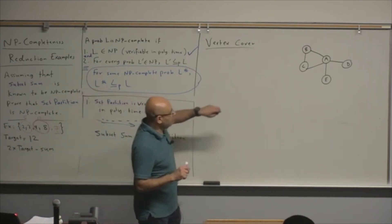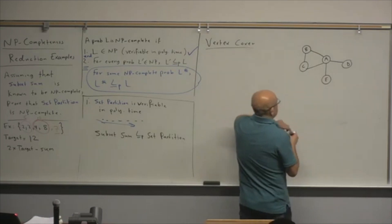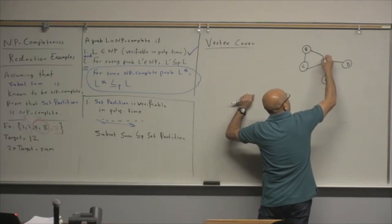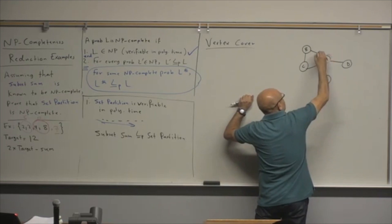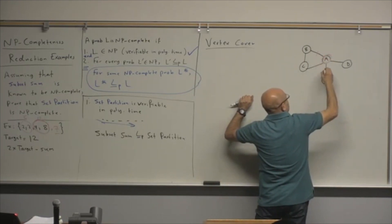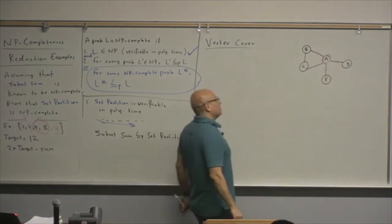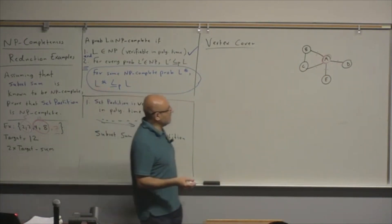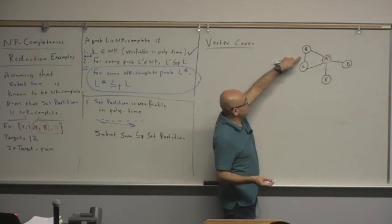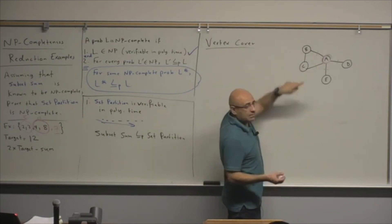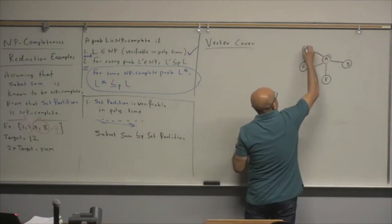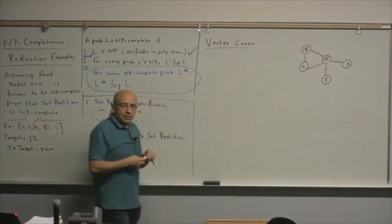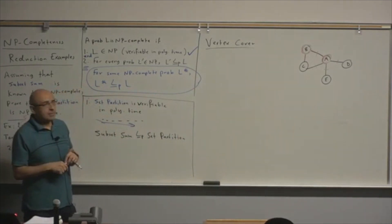So here, vertex A has many edges. If we use A, we cover this edge, this edge, this edge, and this edge — four edges. But we still have one more edge to cover, so we can cover it using C or B. This example makes it look easy, but in general this is a hard problem.